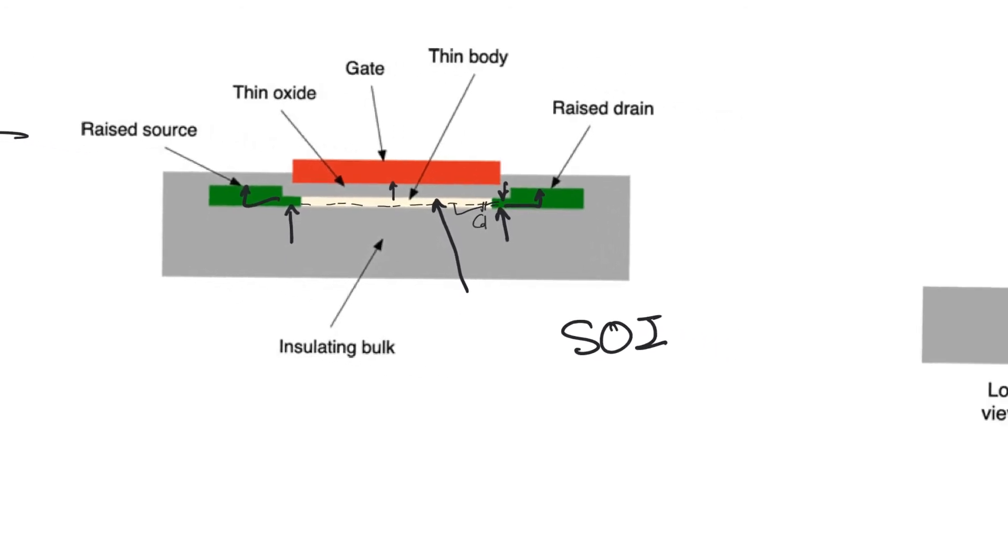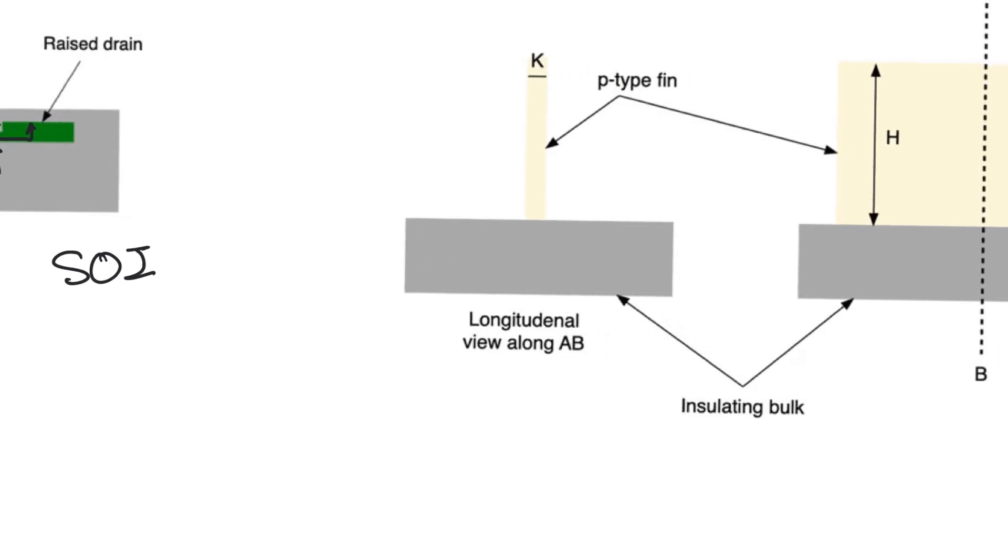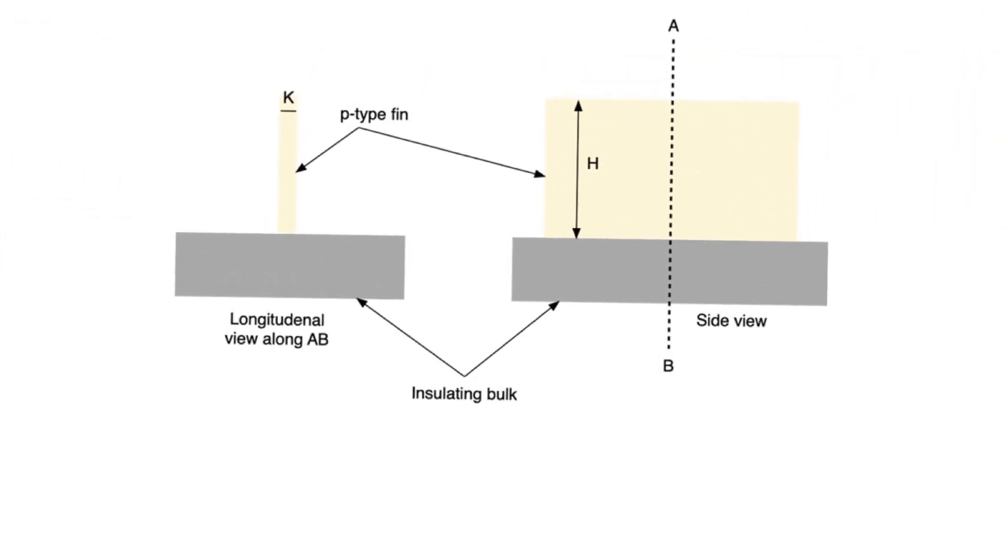So silicon on insulator is one way we can do this. Another way we can do it and there's no reason we can't combine both these ways is by using FinFETs and other 3D MOSFET structures.